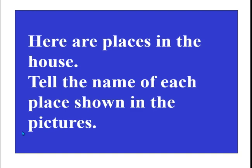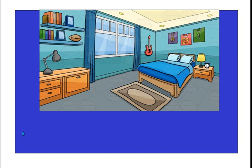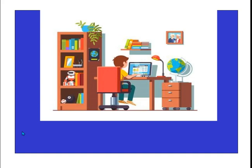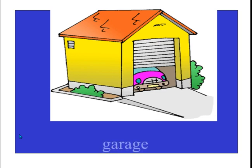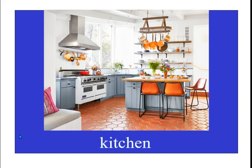So here are places in the house — tell the name of each place shown in the pictures. What's this place? There's a bed there — you have a bedroom. This is a study room. You can see you park your car there — that's a garage. And it's a kitchen.